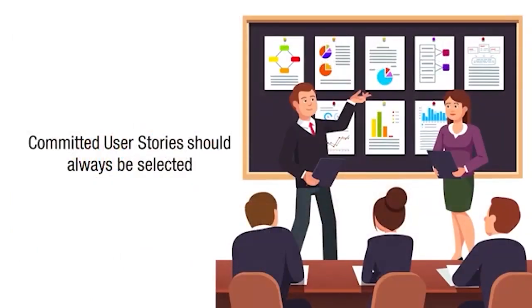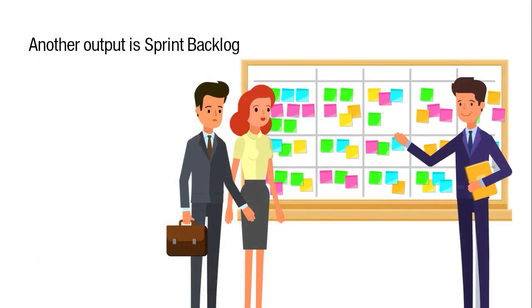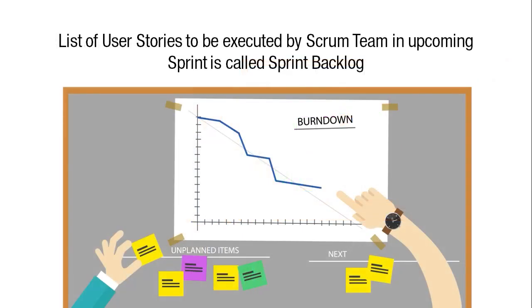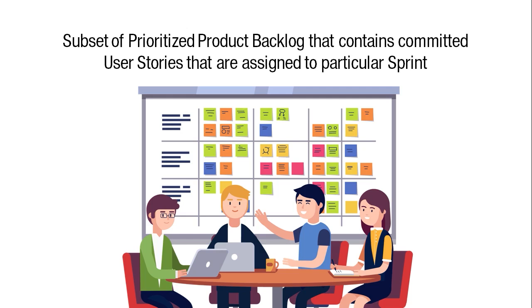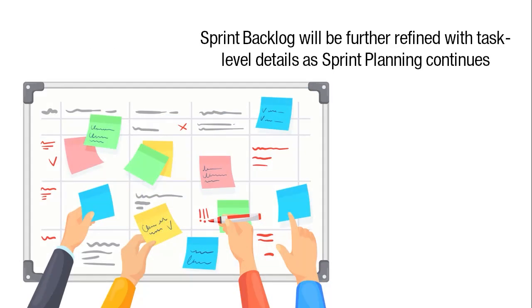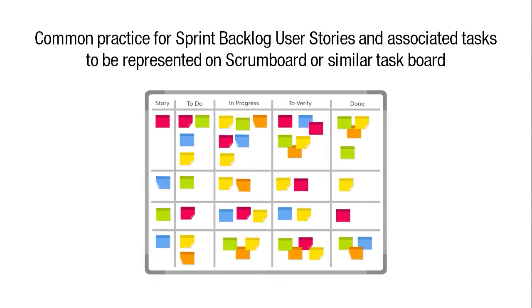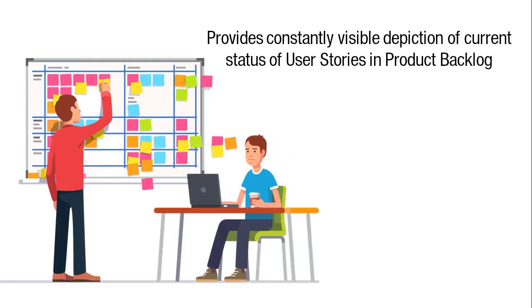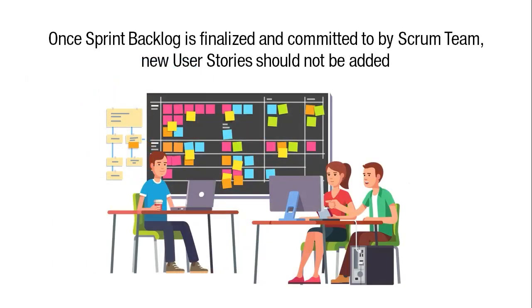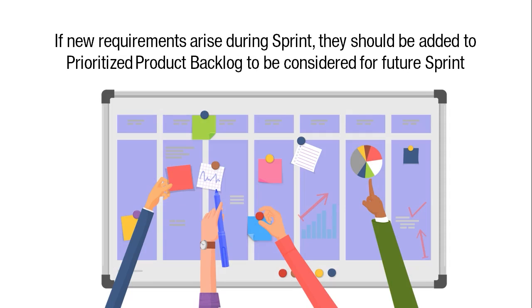Committed user stories should be selected per the priorities defined by the product owner. Another output is the Sprint Backlog — the list of user stories to be executed in the upcoming sprint, and a subset of the prioritized product backlog. The sprint backlog is commonly represented on a scrum board. Once finalized and committed to, new user stories should not be added. If new requirements arise during a sprint, they should be added to the prioritized product backlog for a future sprint.